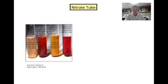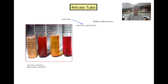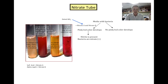Nitrate tubes are used to determine whether an organism is capable of reducing nitrates during anaerobic respiration. You begin the test with a tube of nitrate broth with an organism growing in it, then add nitrate reagents A and B to the tube. These reagents detect the presence of nitrites, which come from the reduction of nitrates. Upon the addition of reagents A and B, there are two possibilities: a pink or red color develops, or no pink or red color develops. If a pink or red color develops, you know nitrite is present, which means that the organism has the ability to reduce nitrate. Therefore, the bacteria is nitrate positive.